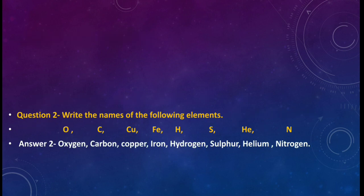Question number 2. Write the names of the following elements. Now the symbols are given. Now you have to write the names of the symbols. O is oxygen. C is carbon. Cu, copper. Fe, iron. H, hydrogen. S, sulfur. He, helium. N, nitrogen. So the questions in exam can come in both the ways. Either the name of the elements will be given you have to write the symbol or either the symbol will be given and you have to write the names. So these are two types of questions we have discussed.